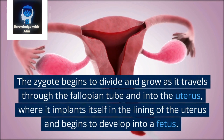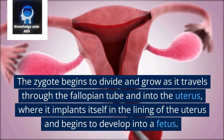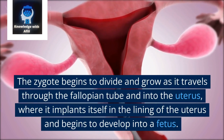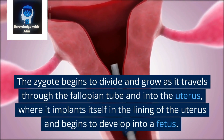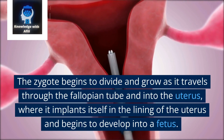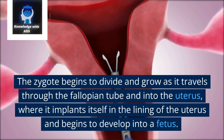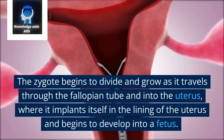The zygote begins to divide and grow as it travels through the fallopian tube and into the uterus, where it implants itself in the lining of the uterus and begins to develop into a fetus.